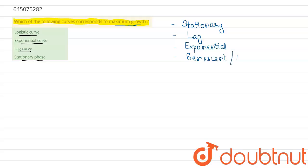It also corresponds to the death phase. So now we will start with all these options one by one. The first option is logistic curve, which does not come under any of the phases of growth curves, so this option is already excluded.